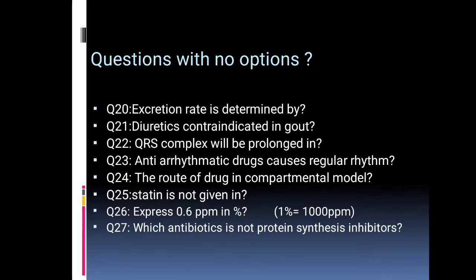Excretion rate is determined by diuretics contraindicated in gout. QRS complex will be prolonged by which antiarrhythmic drug? The route of drug in a compartmental model — this question comes from biopharmaceutics.